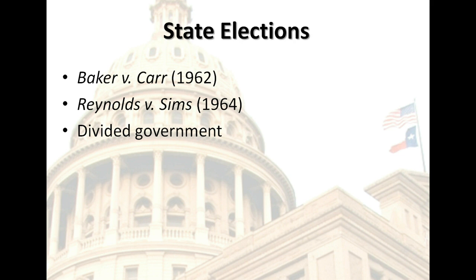Legislative elections in the 1990s were less dependent on candidate personality and the mass media than gubernatorial races, but they are becoming more like congressional races. State legislatures are more closely divided today than in previous decades, and about half of the states have divided legislatures. Divided government exists when a single party does not control both chambers of the state legislature and the governor's office. After the 2008-2009 elections, 23 states had divided government. Since 1990, 21 states have adopted term limits for state legislators, most exclusively through direct democracy mechanisms.